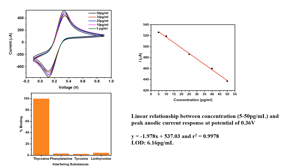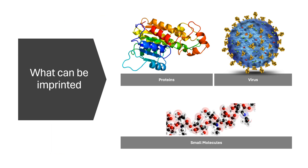We got these results published in the Journal of Applied Electrochemistry. What all things can be imprinted? It's not just small molecules — we can also imprint proteins as well as microorganisms such as viruses.